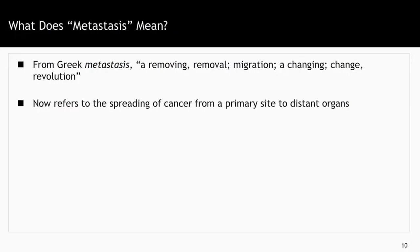An important word in cancer is metastasis. Metastasis is the spreading of cancer from a primary site to distant organs. It literally comes from the Greek word 'metastasis,' meaning removing, removal, or migration — a changing or revolution. Metastasis, which means the spread of cancer from primary sites to distant organs, is an important word to learn early in the study of cancer.